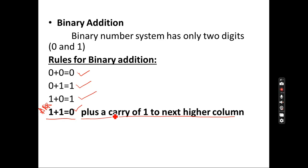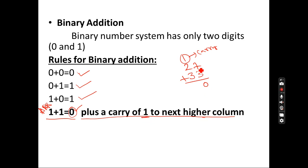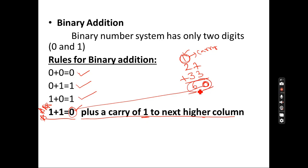To understand the carry concept: suppose I add 27 plus 33. When I add 7 plus 3, I get 10 — so I write 0 and carry 1 to the next digit. Similarly, when adding 1 + 1 in binary, you write 0 and carry 1 to the next digit. Then 2 + 3 = 5, plus the carry of 1 gives 6, so the result is 60.